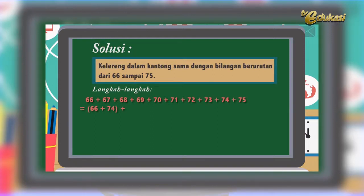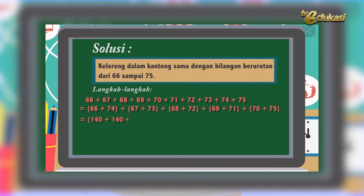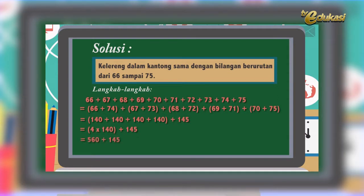66 tambah 74, 67 ditambah 73, 68 ditambah 72, 69 ditambah 71, dan 70 ditambah 75. Sehingga menghasilkan 140 + 140 + 140 + 140 + 145. Kemudian menjadi 4 dikali 140 ditambah 145, atau sama dengan 560 ditambah 145, atau sama dengan 705.